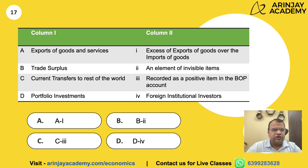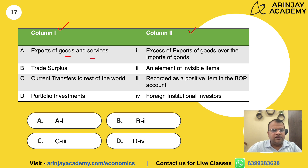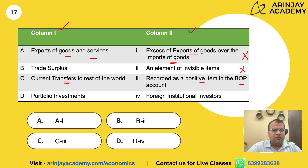Question 17: You need to identify which of the following statements are correct by matching Column 1 with Column 2. Excess of exports of goods over import of goods — this is not the right match for the given term. Trade surplus as an element of invisible items — that is also not correct. Current transfers to the rest of the world recorded as a positive item in the balance of payment account — this is not a positive item since it is a payment made to the rest of the world. Portfolio investments made by a foreign institutional investor — this is the correct answer, so D is correct.